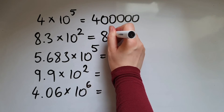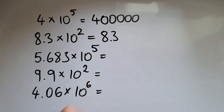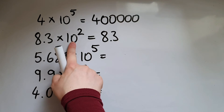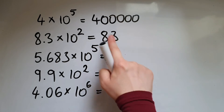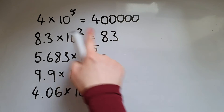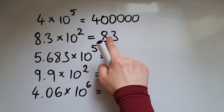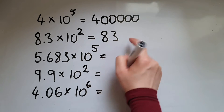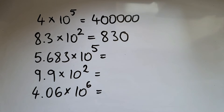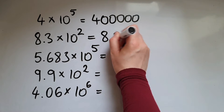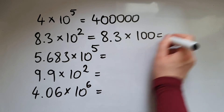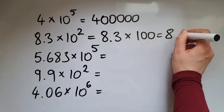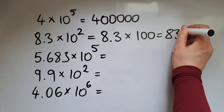So 8.3 times 10 squared, which is 100. That means moving the decimal point two places to the right. So there is one place and another one — that makes it 830. To be clear: 8.3 times 100 is 830.